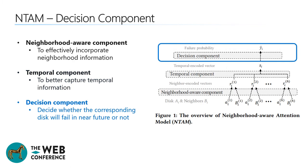The decision component takes the temporal encoded vector as its input. Based on the temporal encoded vector, the decision component calculates the failure probability of the corresponding disk through a fully connected network. Hidden layers use ReLU as their activation functions, the output layer uses sigmoid as its activation function, and between each two layers a dropout mechanism is added to improve robustness. In the final step, NTAM utilizes the predicted failure probability to decide whether the disk will fail in the near future or not.